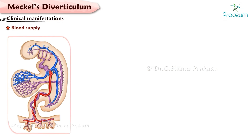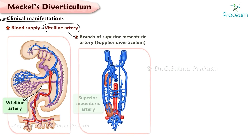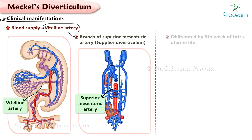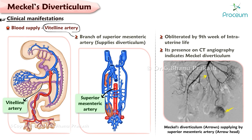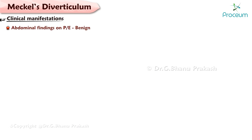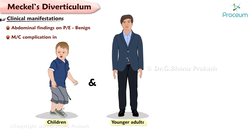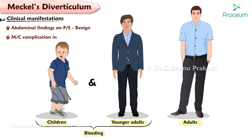The blood supply of Meckel's Diverticulum is the vitelline artery, a branch of the superior mesenteric artery, which supplies the diverticulum. It is normally obliterated by the 9th week of intrauterine life. Its presence on computed tomography angiography indicates a Meckel's Diverticulum. Abdominal findings on physical examination are usually benign. The most common complication in children and younger adults is bleeding; the most common complication in adults is intestinal obstruction.